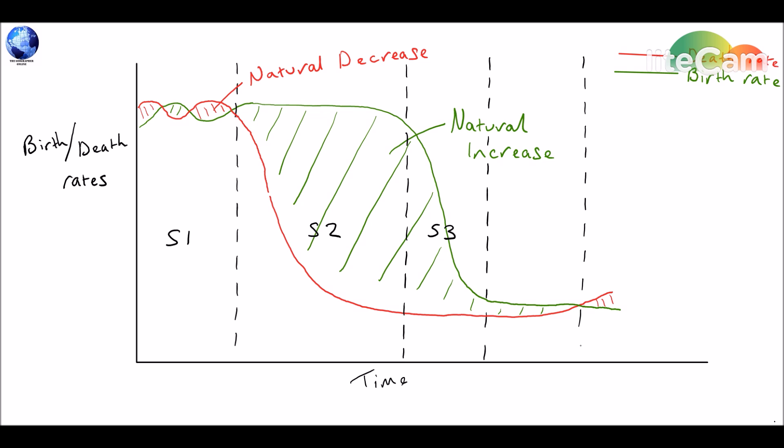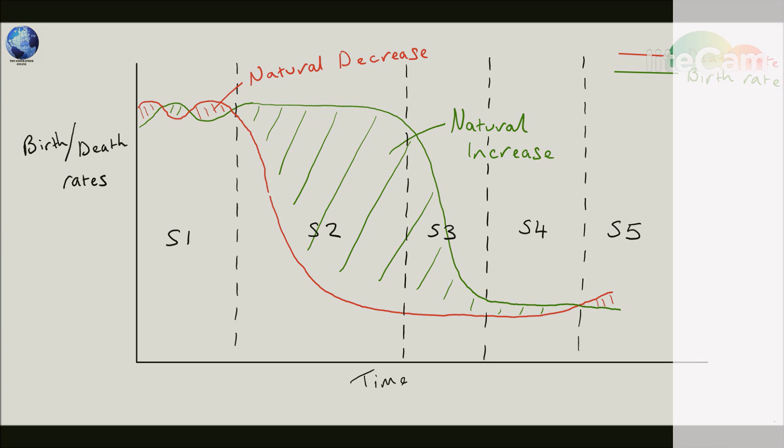Finally, stage five is when death rates now begin to exceed birth rates. And this is relatively less common than, say, a stage four. It can occur in certain countries around the world. Greece was a prime example of this, where families were not having enough children to meet what we call the replacement rate of the population.